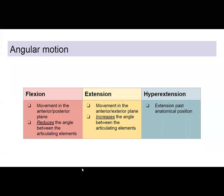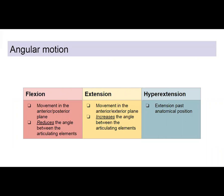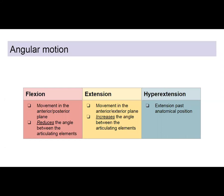Under angular motion, you have flexion, extension, and hyperextension. Flexion is movement in the anterior-to-posterior plane — front to back — and it reduces the angle between the articulating elements. If I flex my bicep at the elbow joint, I'm reducing the angle. If I move my arm up, I'm reducing the angle between my hand and my face, going from 180 to 90 degrees — that's flexion.